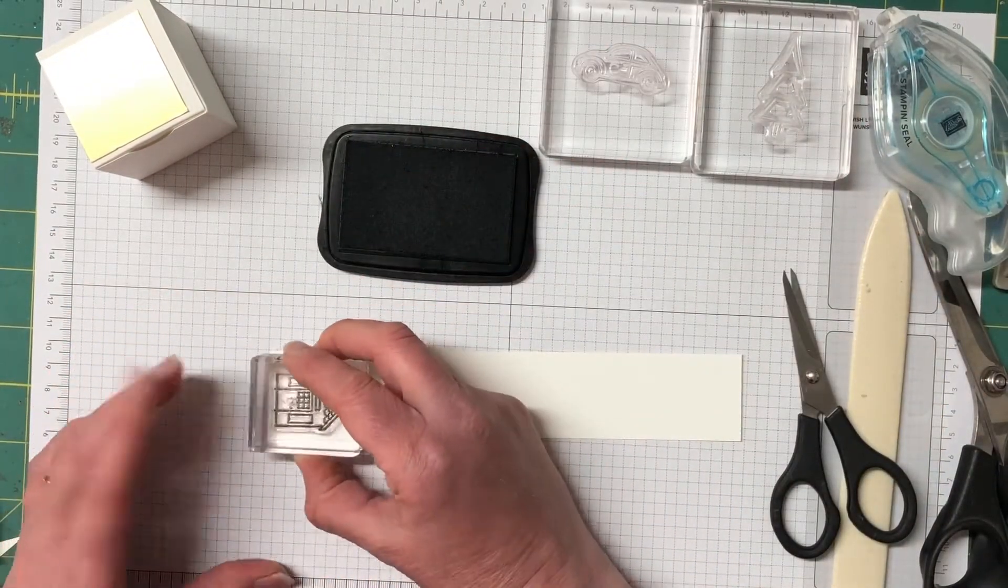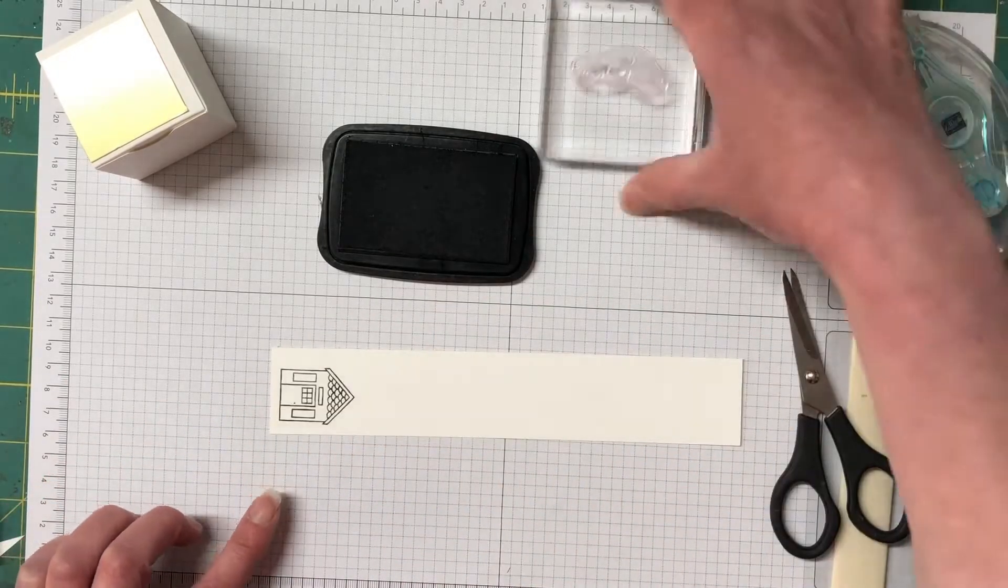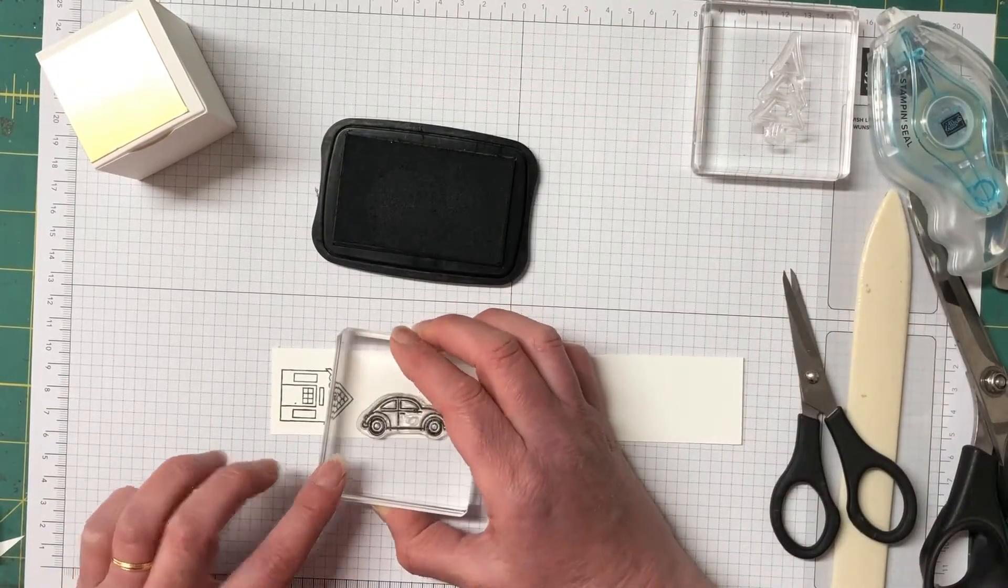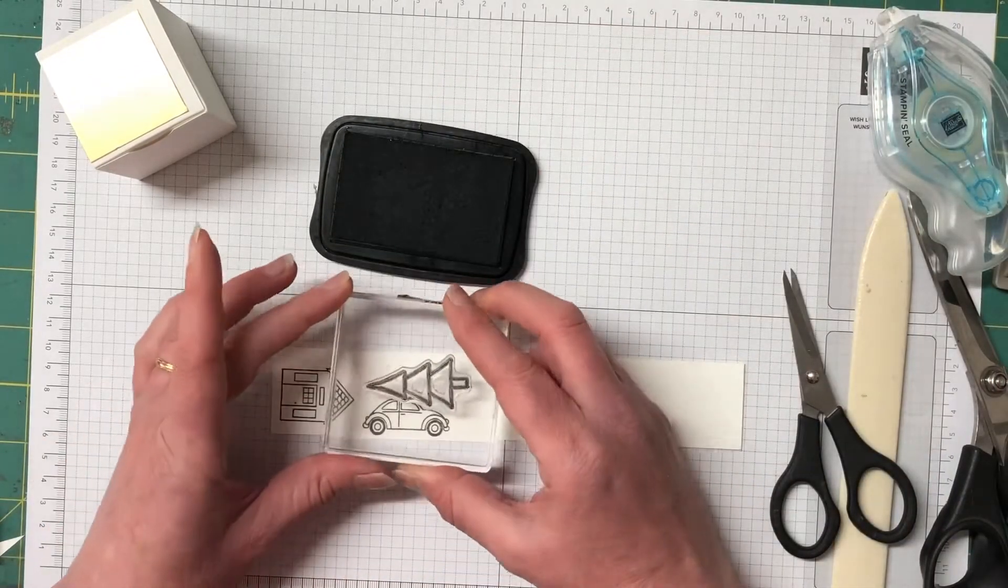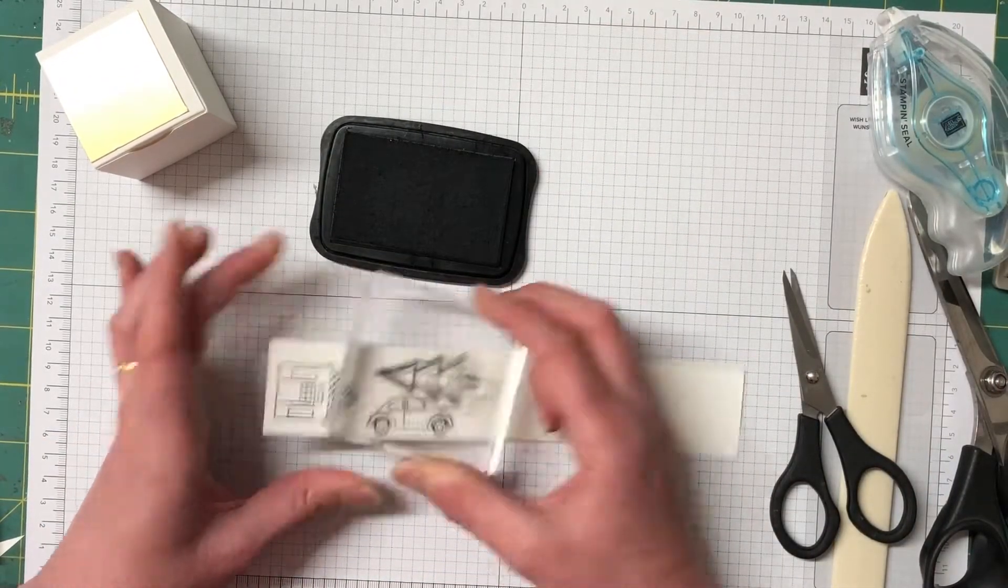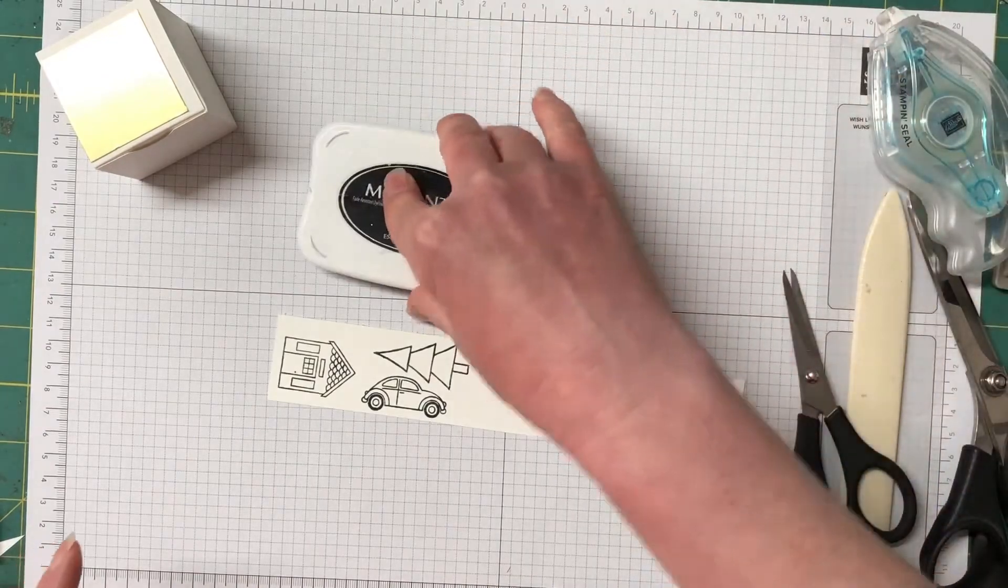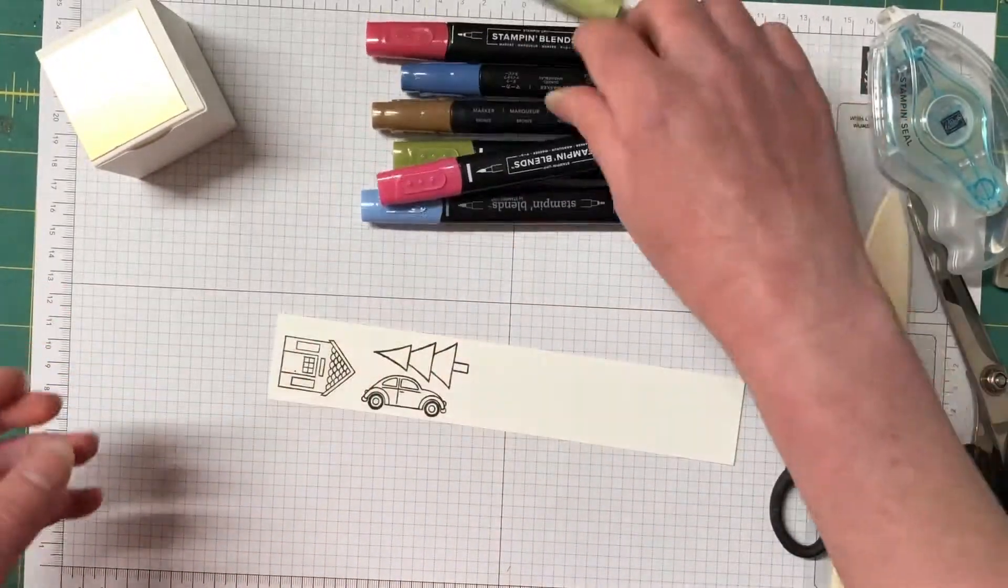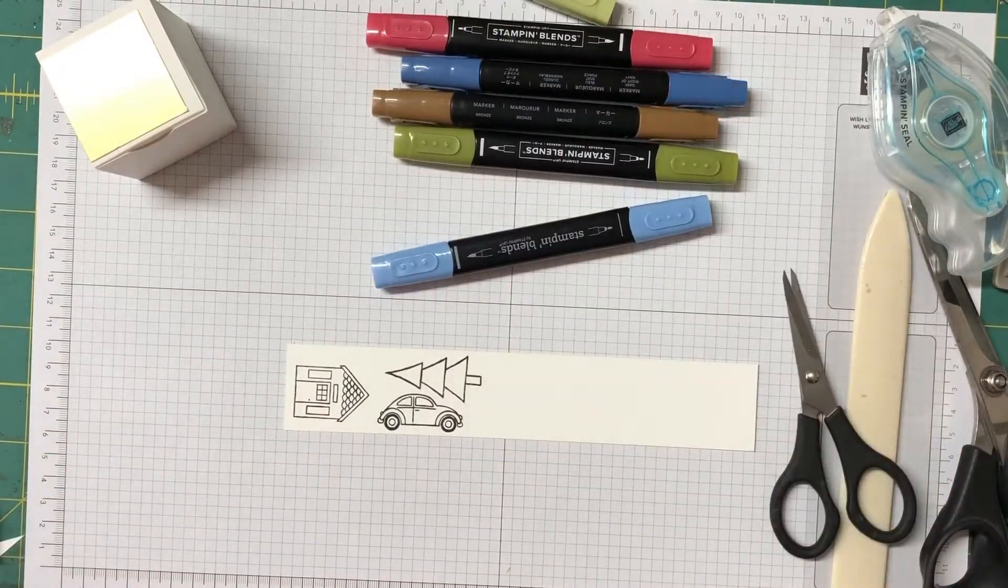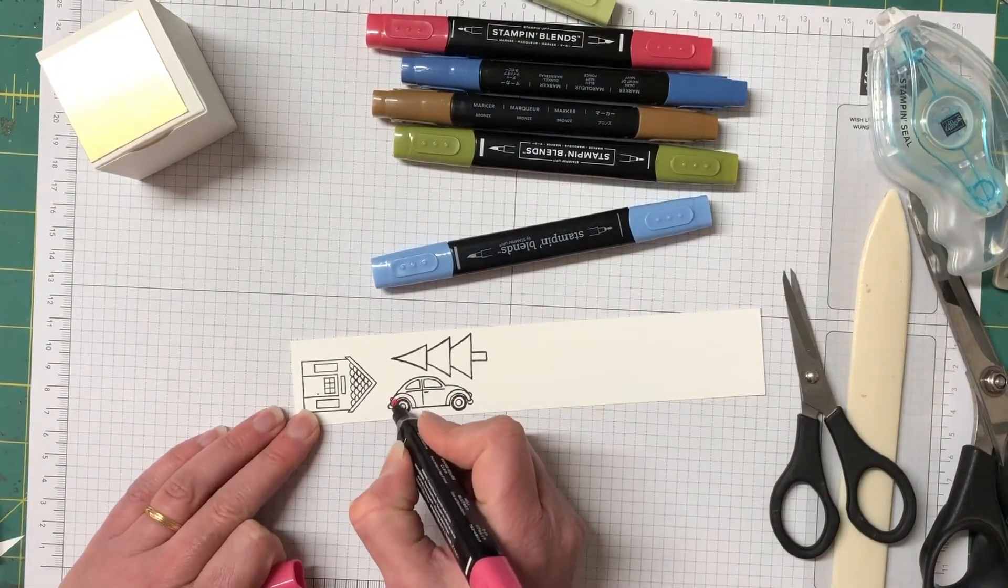So to color these in I'm going to tell you the colors of stamping blends we have old olive, bronze, real red, night of navy and smoky slate so super cute colors. These are all part of the colors from the trimming the town designer series paper and I don't know whether I said this before but this is part of the trimming the town suite that we're using today.